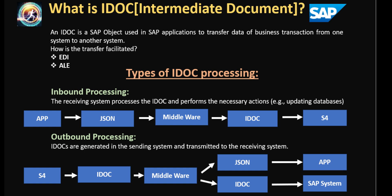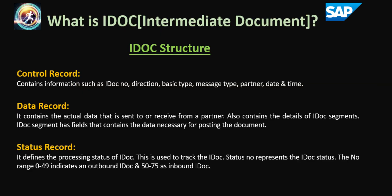Now let's break into an IDOC and understand what contents are present in it. IDOC is an intermediate document — it is more like a structure. That structure contains three major entities: control record, data record, and status record. IDOC is an SAP object in a structured format, and it contains data in a structured format with these three components.